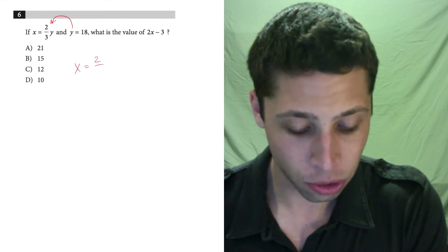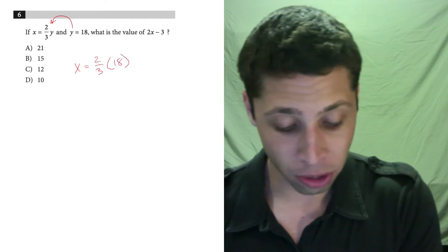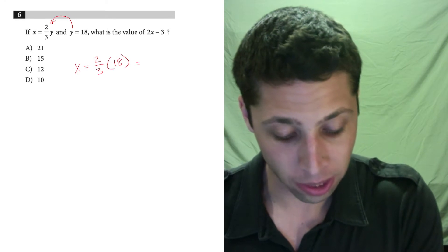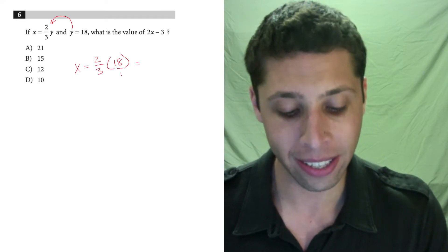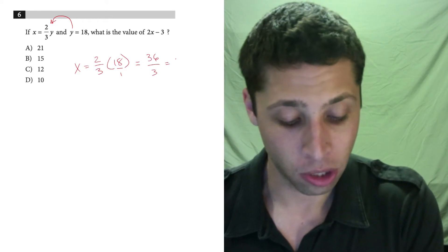x equals 2 thirds of 18. Now, there's a couple ways to do it. You can just multiply across the tops because really this is two fractions. So 18 times 2 is 36 divided by 3, which is 12.